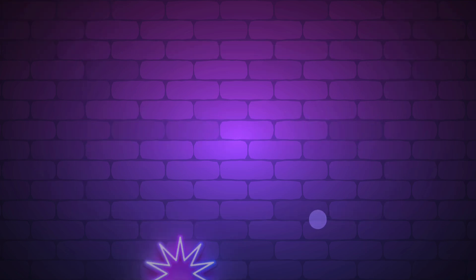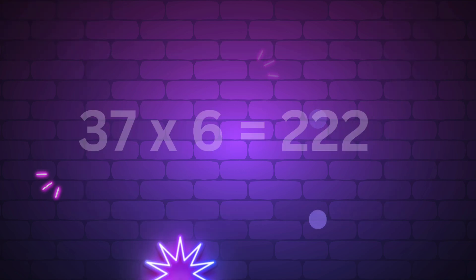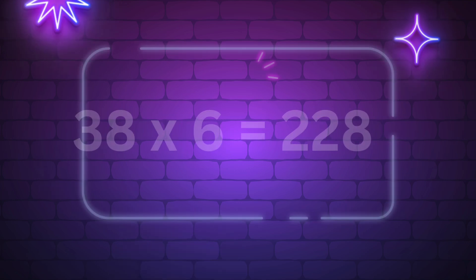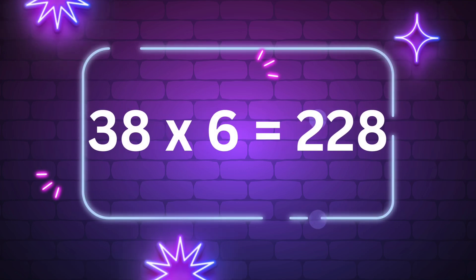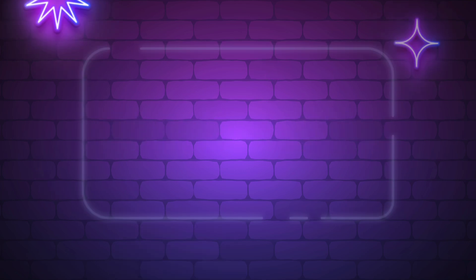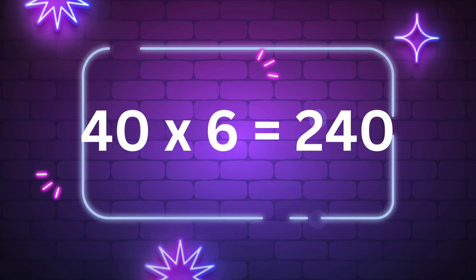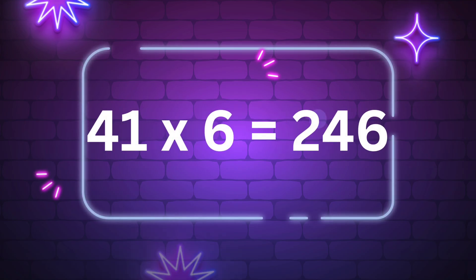Thirty-two times five is 160. Thirty-three times five is 165. Thirty-four times five is 170. Thirty-five times five is 175. Thirty-six times five is 180.